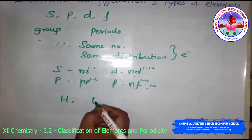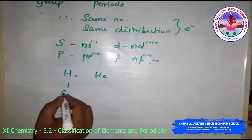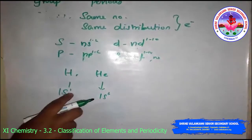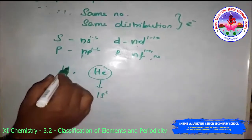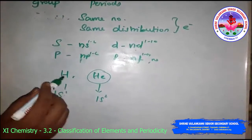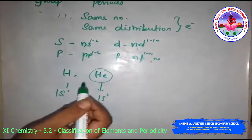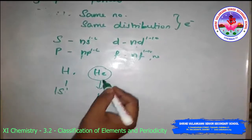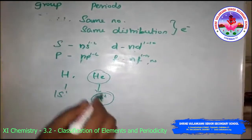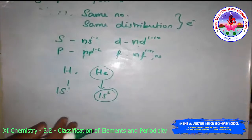There are two exceptions: hydrogen and helium. Hydrogen's electronic configuration is 1s1 and helium's is 1s2. Helium is placed in the p-block, while hydrogen is placed in group 1 with the alkali metals because hydrogen carries an electropositive character. Hydrogen can also gain one electron to attain a noble gas configuration. Helium's valence shell is completely filled, so it shows properties like a noble gas, and is placed in group 18 with the inert gases.